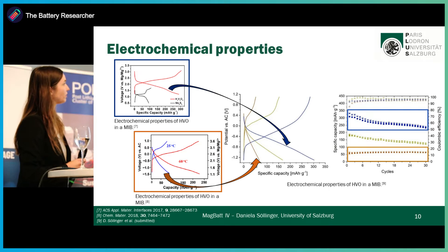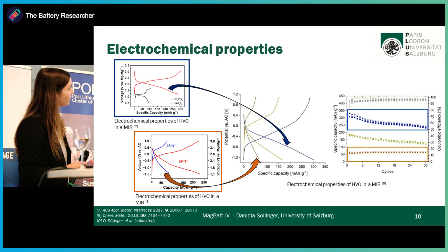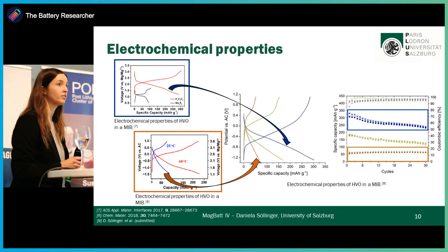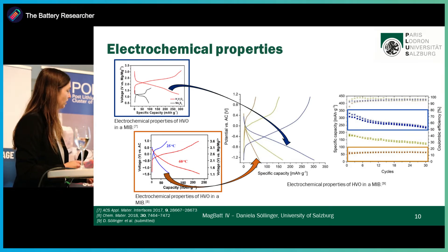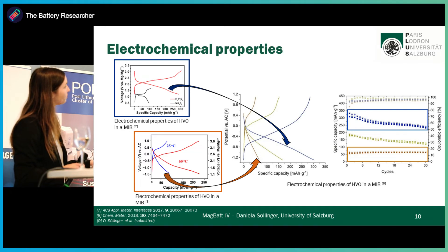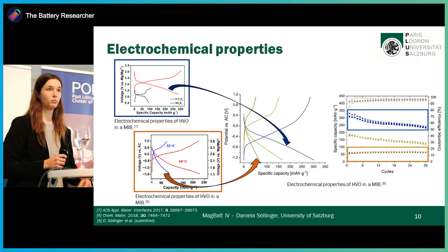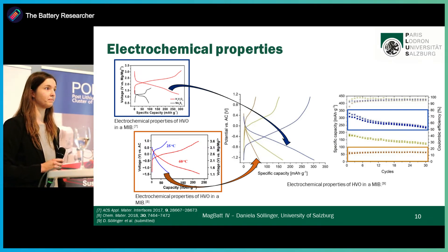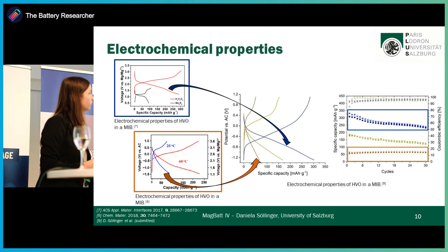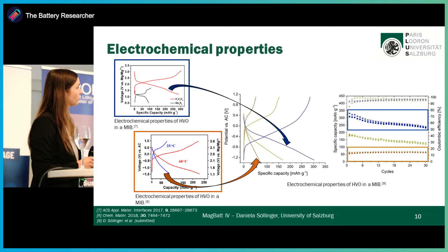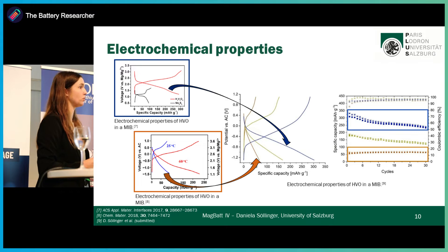If we further look at the capacity retention after 30 cycles, we see that for hydrated vanadium oxide without any water, the specific capacity is more or less constant during the charge and discharge process, but the capacity fading increases with a higher amount of water in the system. The further question is: what exactly happens inside the structure with a higher amount of water? To address this topic, we focus on the setup with the lowest water content, further called HVO dry, and with the highest water content, further called HVO water.